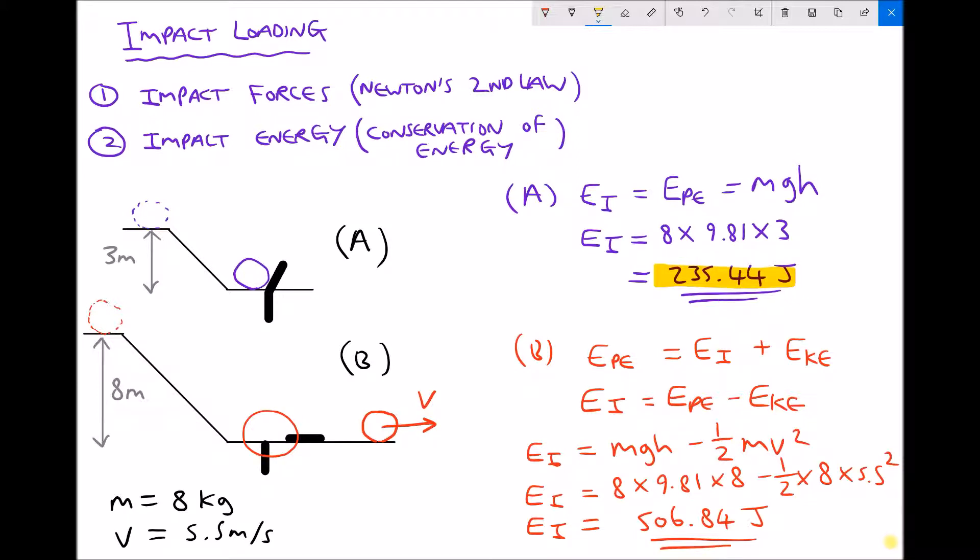We then carried out a second test where we increased the amount of energy being applied to the test piece and we found that it did rupture. It failed and the object that was used to damage the test piece also contained kinetic energy after the damage had occurred because it had a velocity as it moved away.